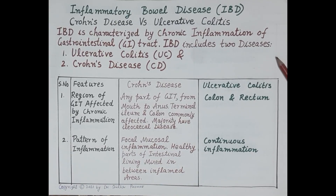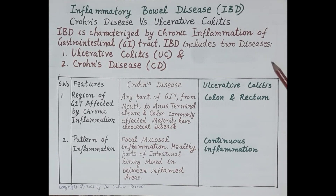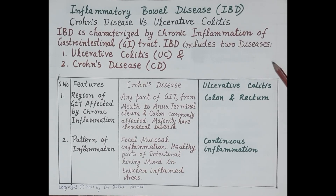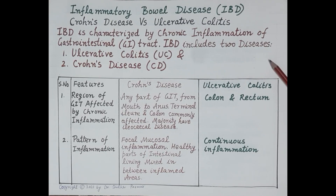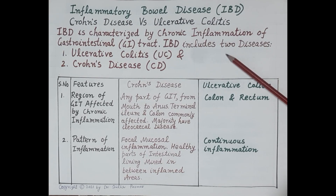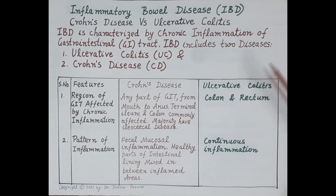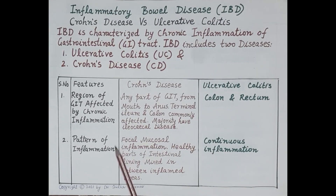Today we will discuss features of inflammatory bowel disease. Inflammatory bowel disease is characterized by chronic inflammation of the wall of the gastrointestinal tract. The wall of the GIT is made up of four layers: the innermost is the mucosa, below that is the submucosa, then the muscle layer, and the outermost layer is the serosa. Inflammatory bowel disease includes two diseases: ulcerative colitis and Crohn's disease.